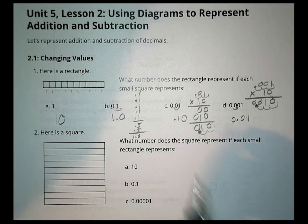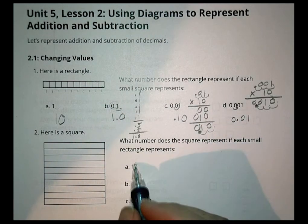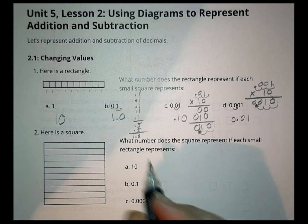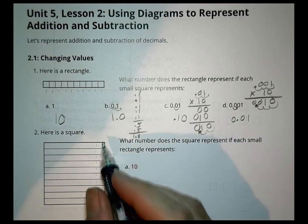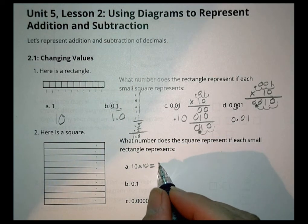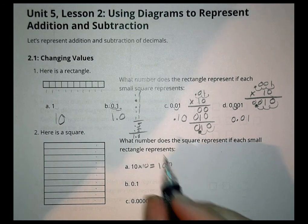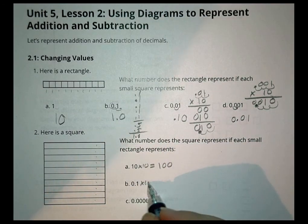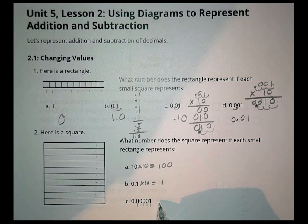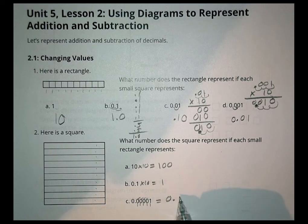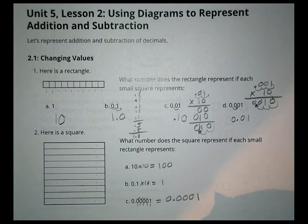Here's a square. What number does the square represent if each small rectangle is ten, a tenth, and then the smaller units? There are ten rectangles across and ten down — ten times ten — so the square is 100. If each rectangle is a tenth, then tenth times ten equals one. And for the smallest unit, hundred-thousandths times ten equals ten-thousandths — that's one ten-thousandth.